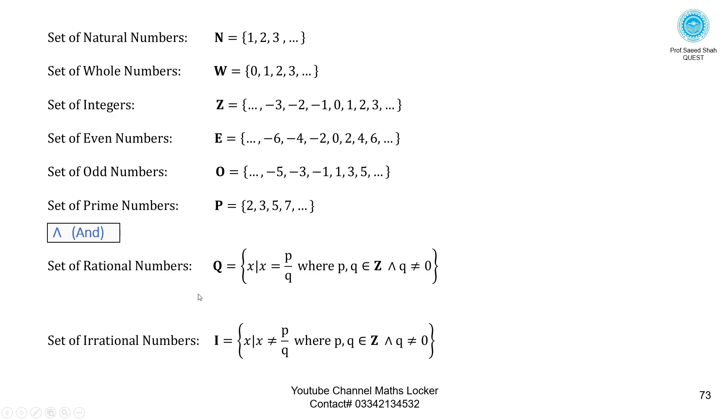Set of rational numbers are written in set builder form. Set of real numbers: set of rational numbers union set of irrational numbers. Rational and irrational combined gives the set of real numbers.